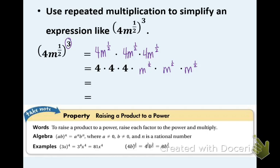And now we have three fours, so we can just combine that to be four to the third. And we also have three M to the one-halfs, so a condensed version would be M to the three-halves, because there's three of them. And the very last step is four to the third is 64, and we'll keep the M to the three-halves. And that is our simplified form.